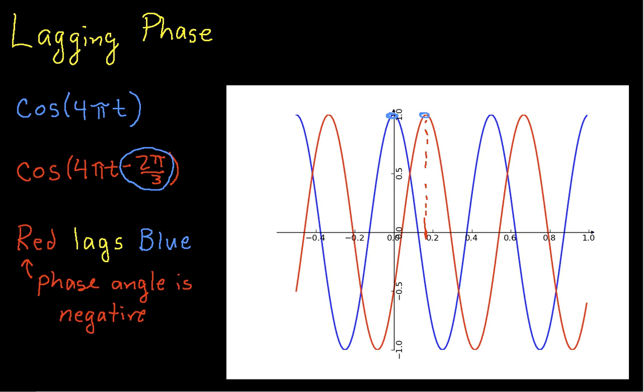This is also another way of thinking about it: the phase angle is negative. Now, a phase angle of minus 2π/3 is equivalent to minus 120 degrees. For those of you that have never done this conversion before, you take negative 2π/3 and multiply it by 180 degrees over π. And if you do that correctly, you get negative 120. But this is the factor that converts from radians to degrees. So that's an example of lagging phase.